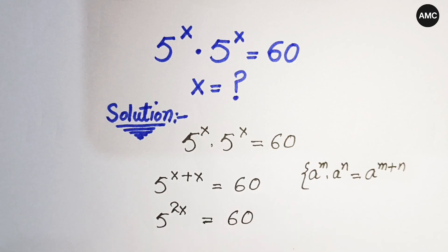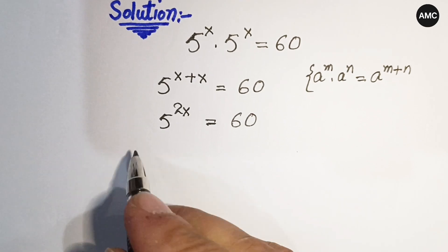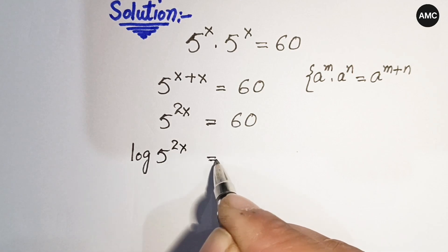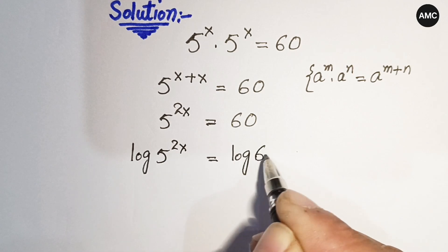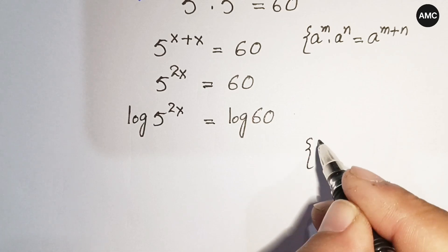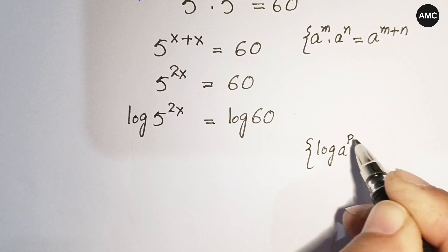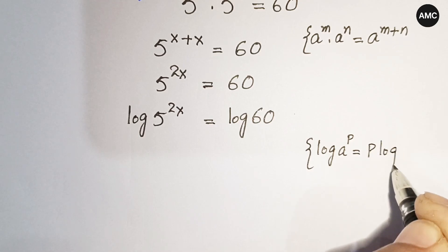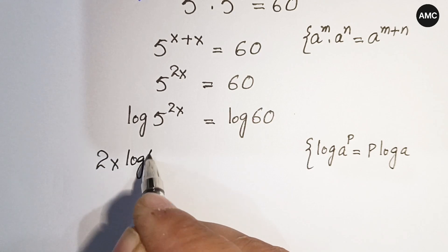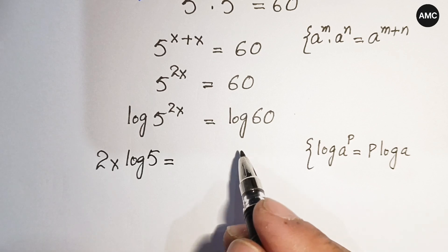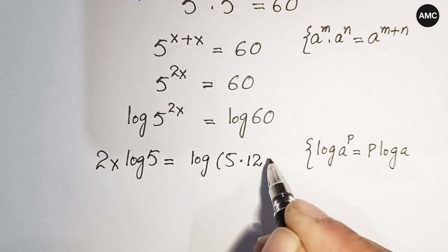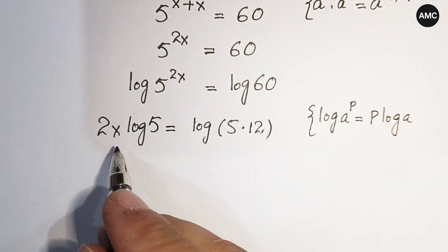Now if we take the natural log on both sides, we get log of 5 to the power 2x equals log 60. Using the logarithm law — log a to the power p equals p times log a — we get 2 times x times log 5 equals log 60.